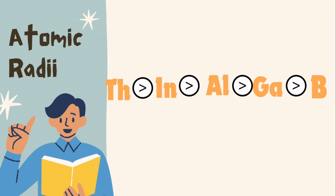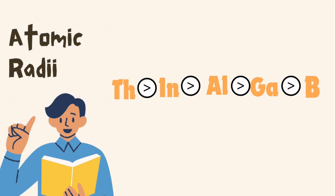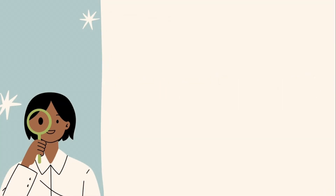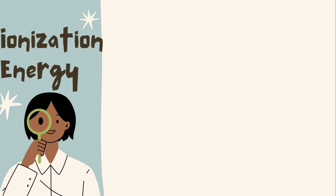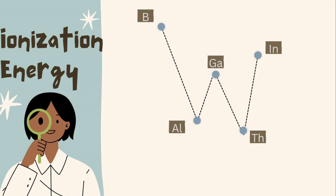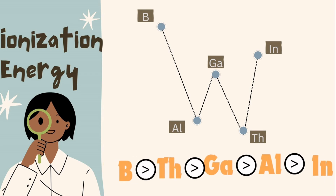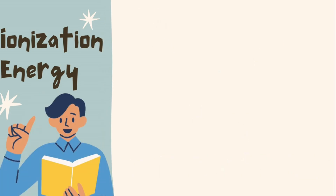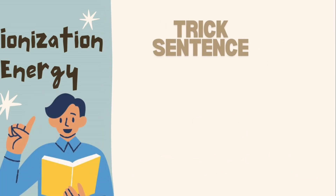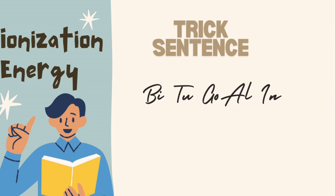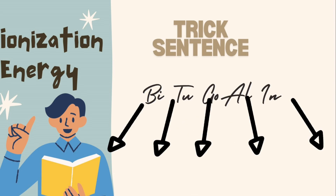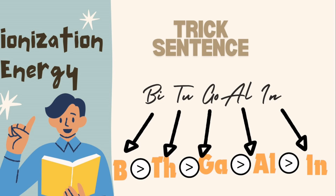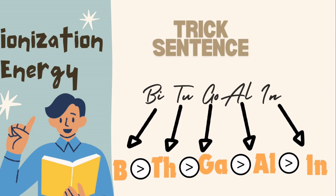The next property is ionization energy. There is a W-graph you can learn from, which will lead you to the correct sequence. If you're not comfortable with the graph, you can always use a trick sentence: 'Bit to gold in.' The initials represent the elements in order — boron, thallium, gallium, aluminium, and indium.